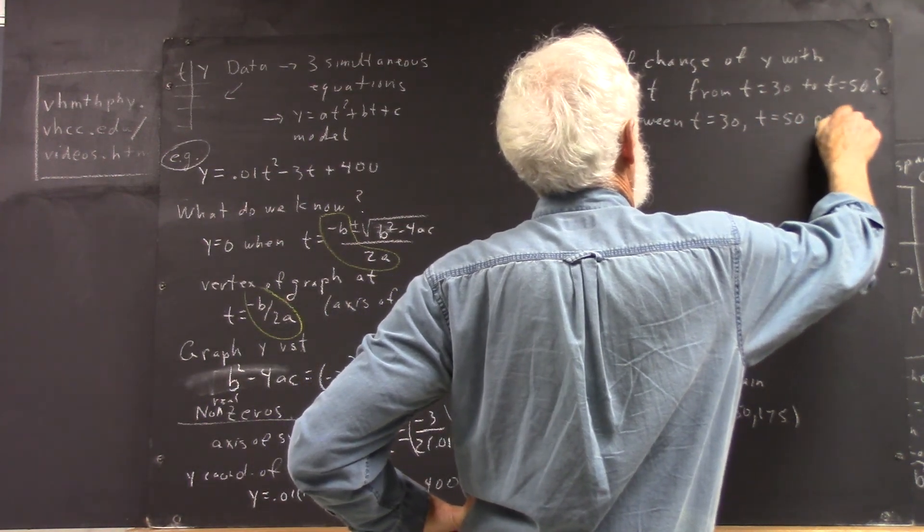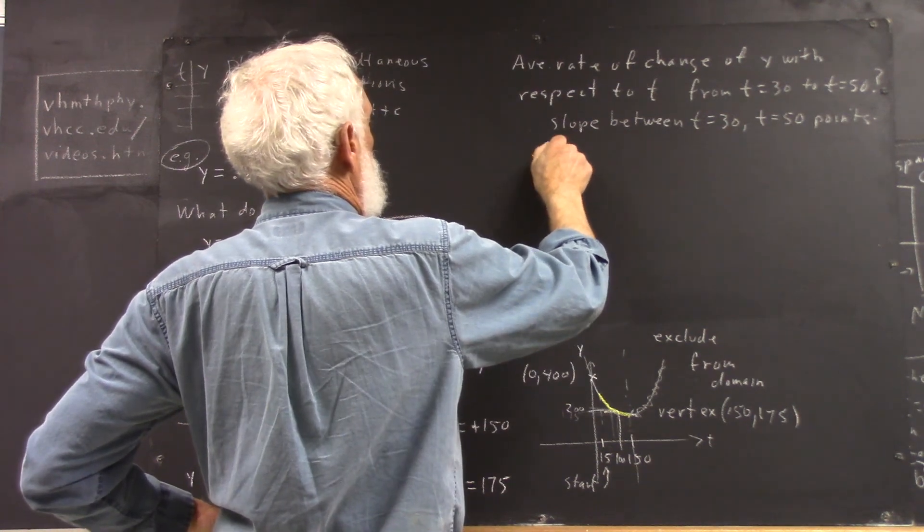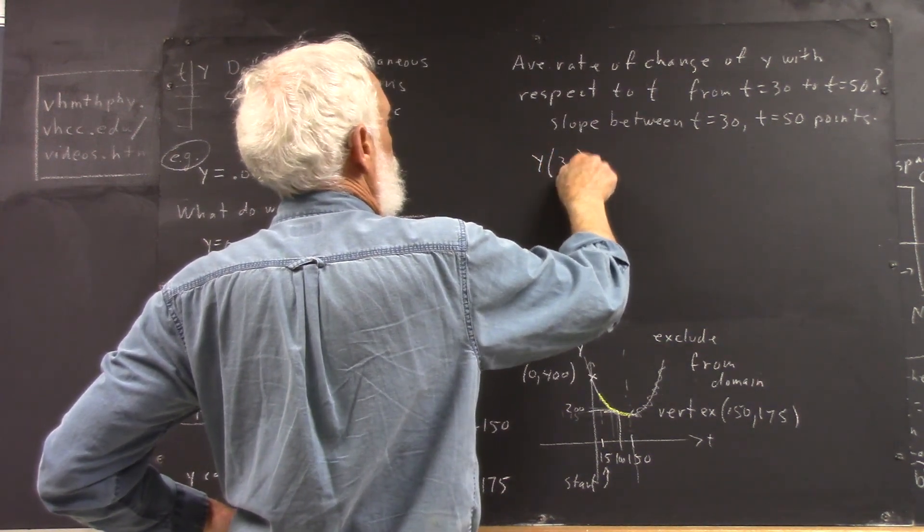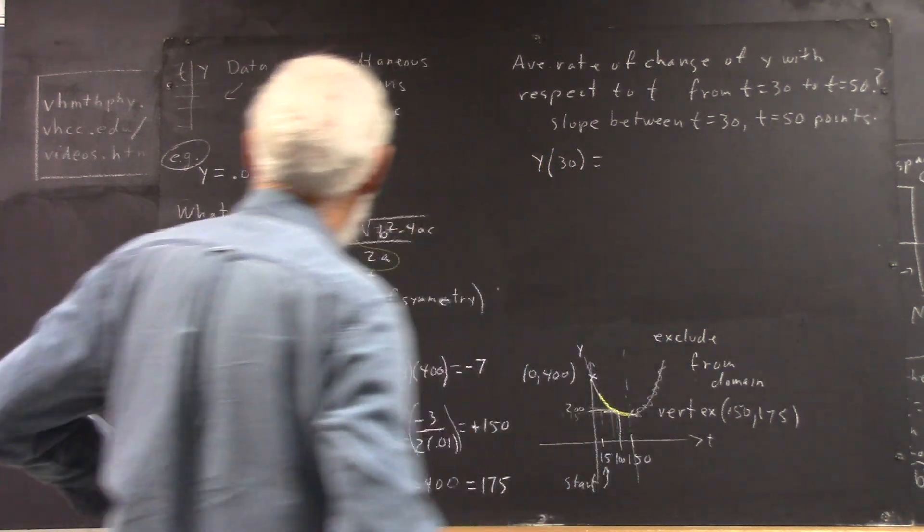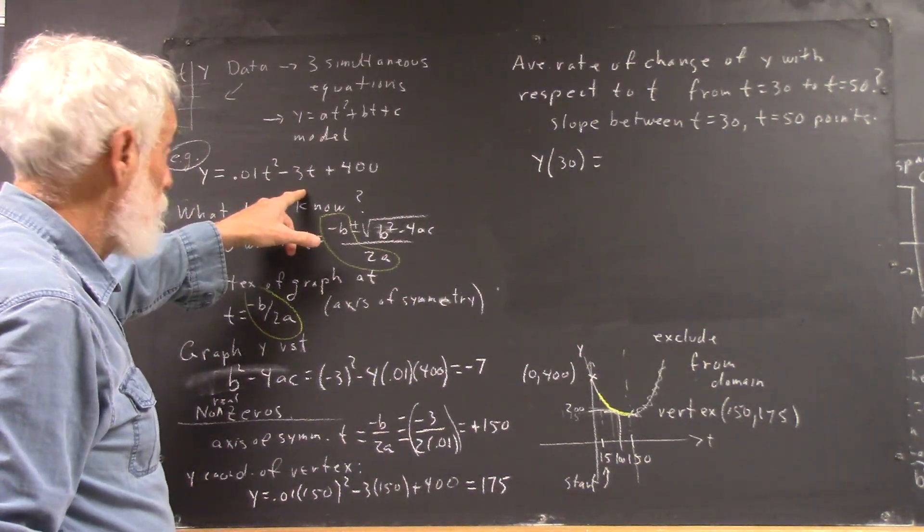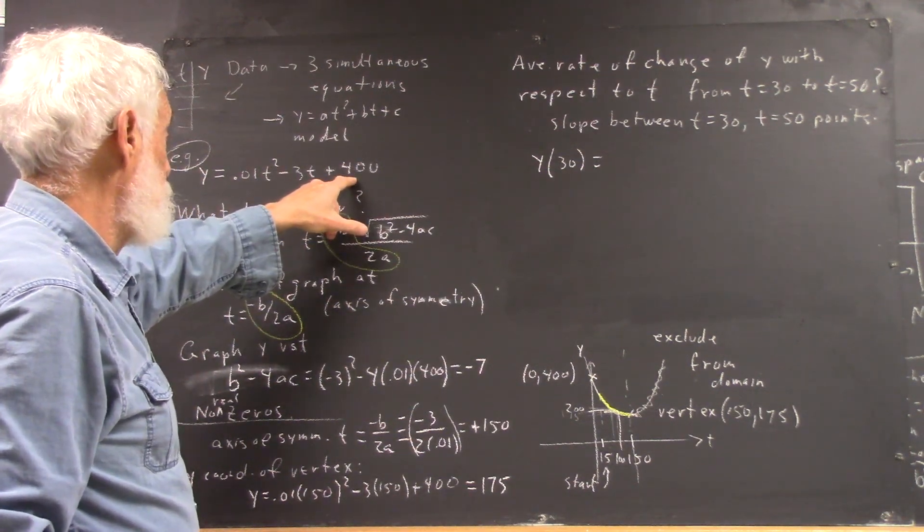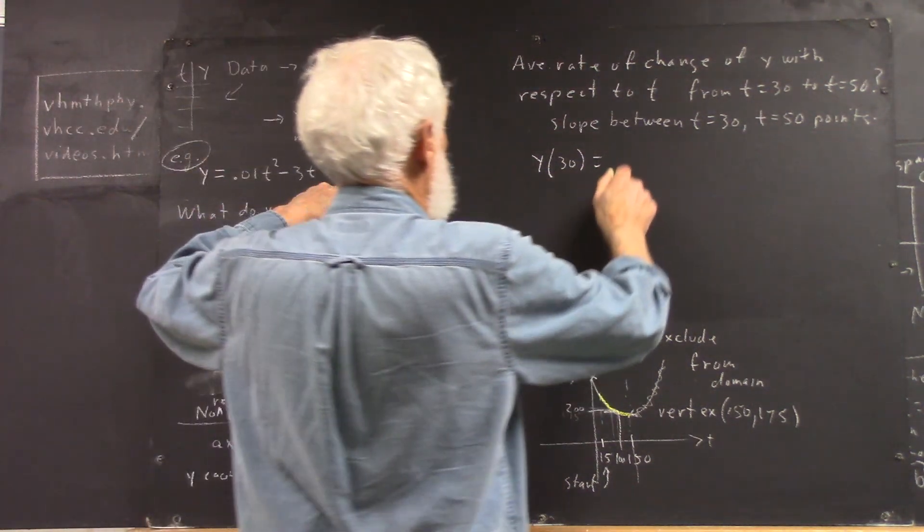So it's between the t equals 30 and t equals 50 points. Let's see, now y of 30 is what? 30 squared is 900, 0.01 times that is 9, minus 3 times 30, which is minus 90, so that's minus 81, so I think when we add that to 400, we get 319.